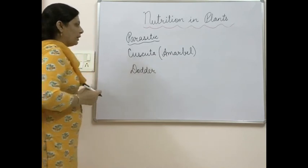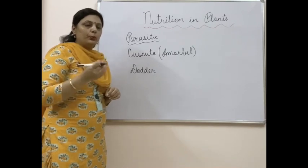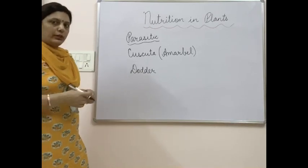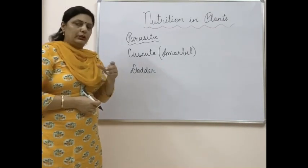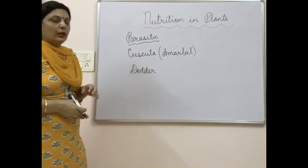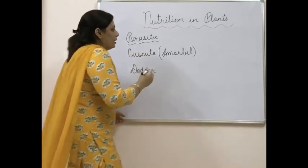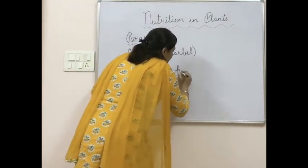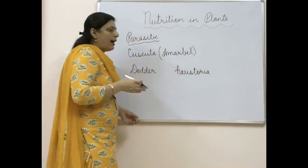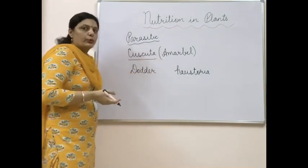Cuscuta is a plant with very tubular, yellow, creamy-colored tubular structures that spread easily over other plants. Wherever even a small part of it falls, it will grow completely and cover the whole plant or tree with those tubular structures. This tubular structure is its stem, and it has roots called haustoria.